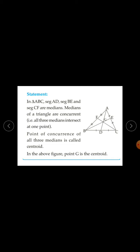Now there is one important note. In triangle ABC, seg AD, seg BE, and seg CF are medians. Medians of a triangle are concurrent, meaning all three medians intersect at one point.